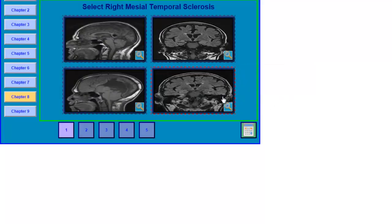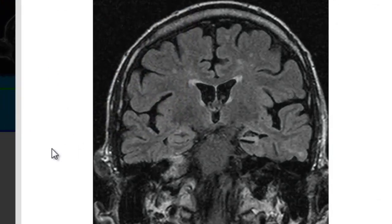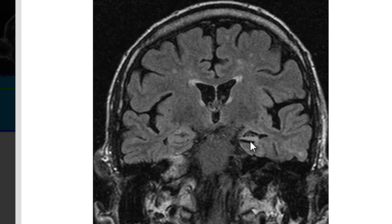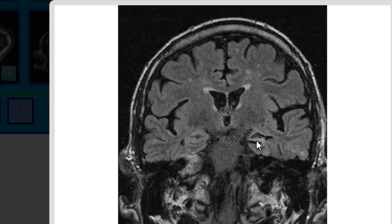What about this patient? This is a coronal FLAIR image of the temporal lobe. This is the left temporal lobe and this is the right temporal lobe. The most striking finding on this MRI is the area indicated by the arrow. Compared to the hippocampus on the right side, you can see that the left hippocampus has lost its architecture — it is smaller in size and bright in signal. This is left mesial temporal lobe sclerosis, not right.